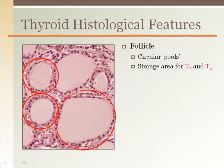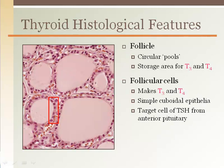Surrounding each follicle are follicular cells, which are made of simple cuboidal epithelial tissue. Thyroid stimulating hormone from the anterior pituitary gland targets these follicular cells to initiate the release of the thyroid hormones T3 and T4 from within the follicles into the bloodstream and out to the cells of the body.